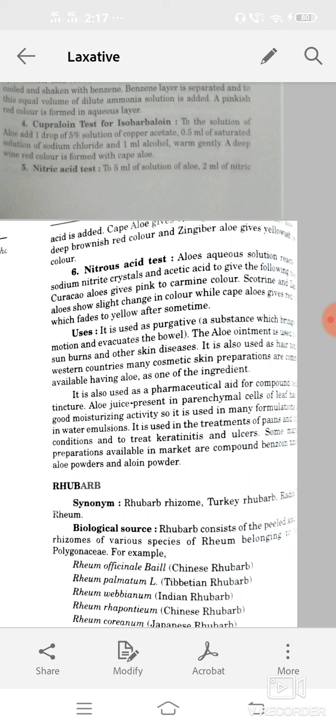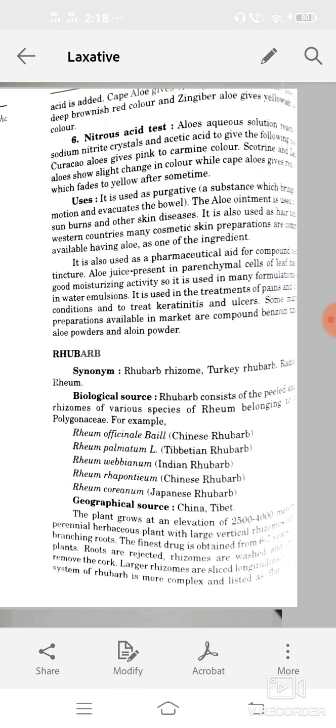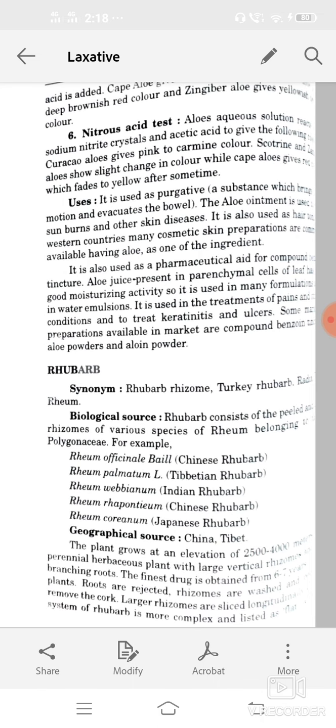These are available in different forms like benzoin tincture, aloe powder, aloin powder. Next drug is rhubarb. Synonym: rhubarb rhizomes, Turkish rhubarb, or rheum.